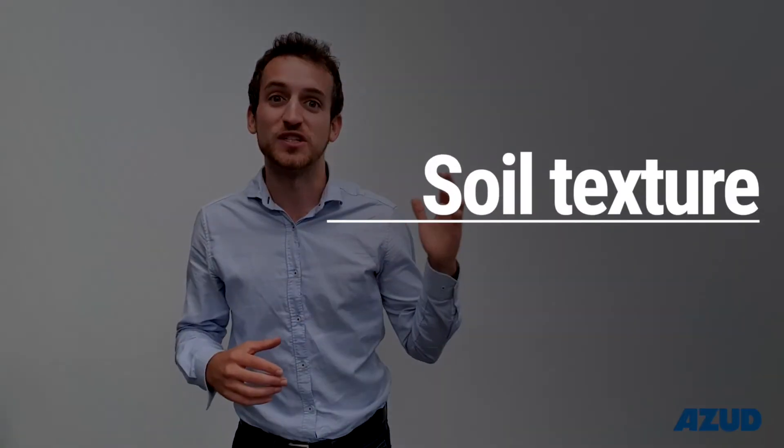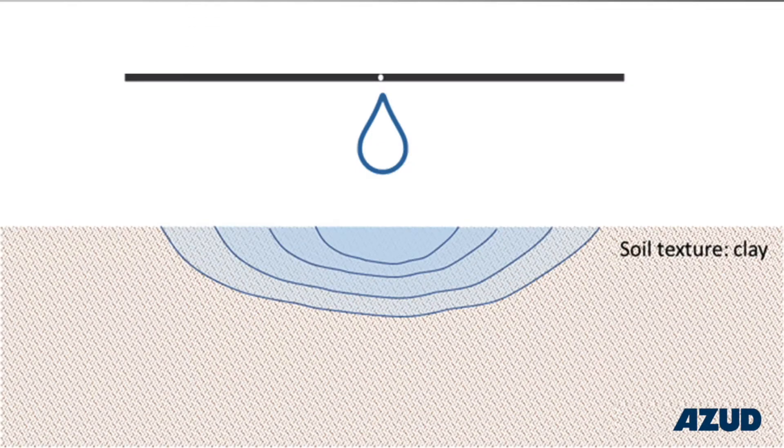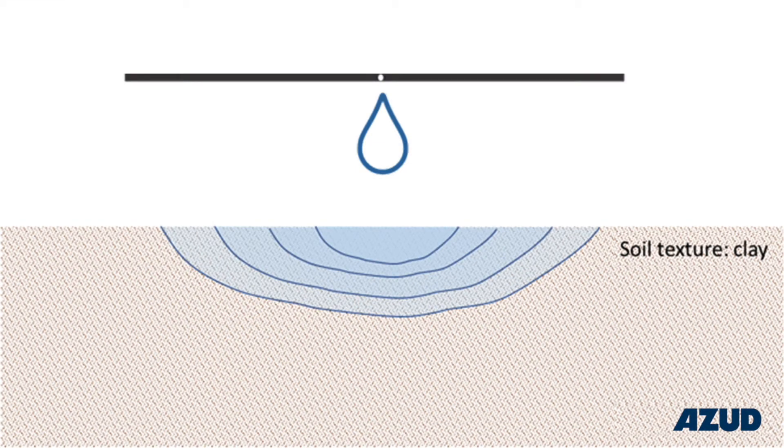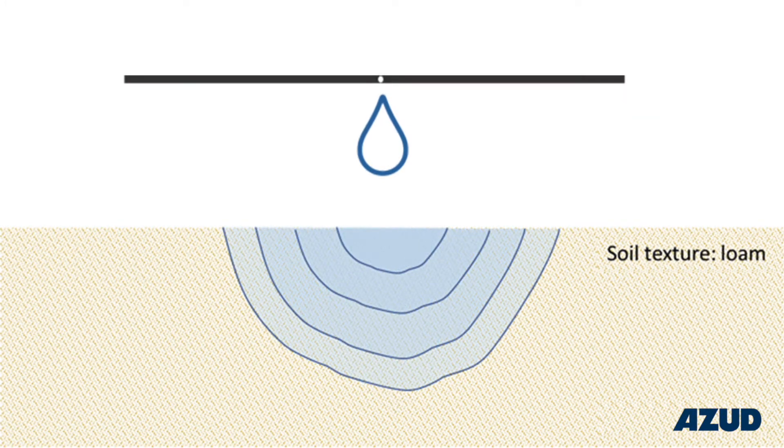According to the soil texture, the wet bulb pattern will be different. The higher the fine particles percentage, the wider and shallower the wet bulb. And the more sandy the soil is, the narrower and deeper it will be.